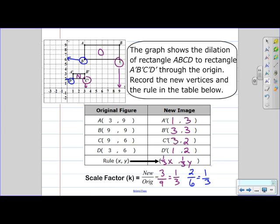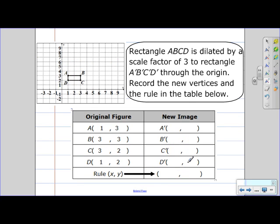Let's take a look at our next question. Rectangle ABCD is dilated by a scale factor of 3 to rectangle A'B'C'D' through the origin. Record the new vertices and the rule in the table below.